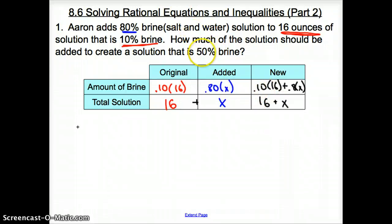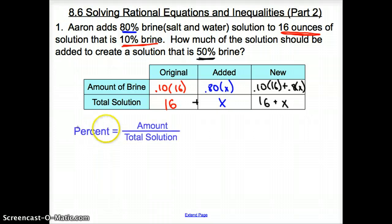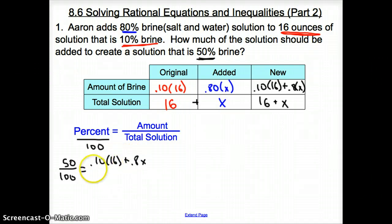Now we set up everything. How can we put this in an equation? We were dealing with percents, and it says how much of the solution should be added to create a 50% brine. We know that percent is out of 100. So let's use this 50%. It's going to be 50 over 100, and that's going to equal your amount. Our amount is 0.10 times 16 plus 0.8x. That's going to go over the total amount of solution we had, 16 plus x.